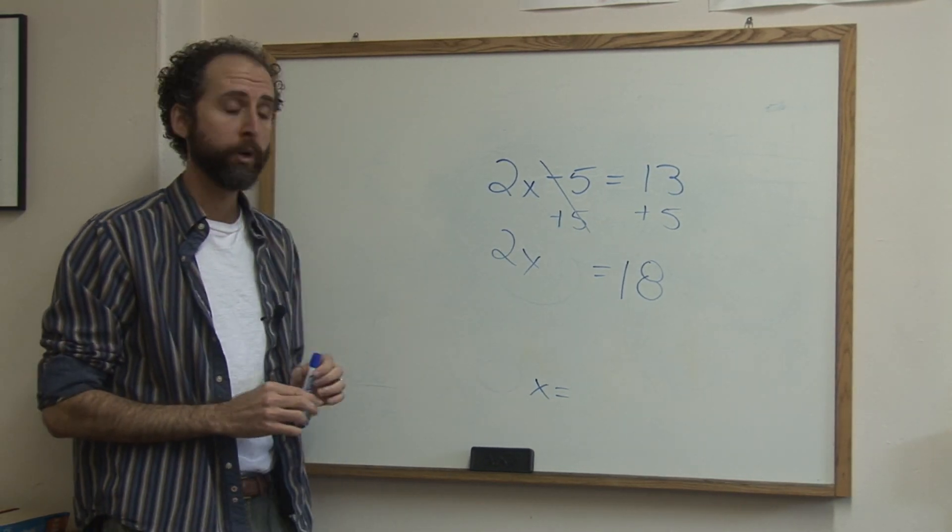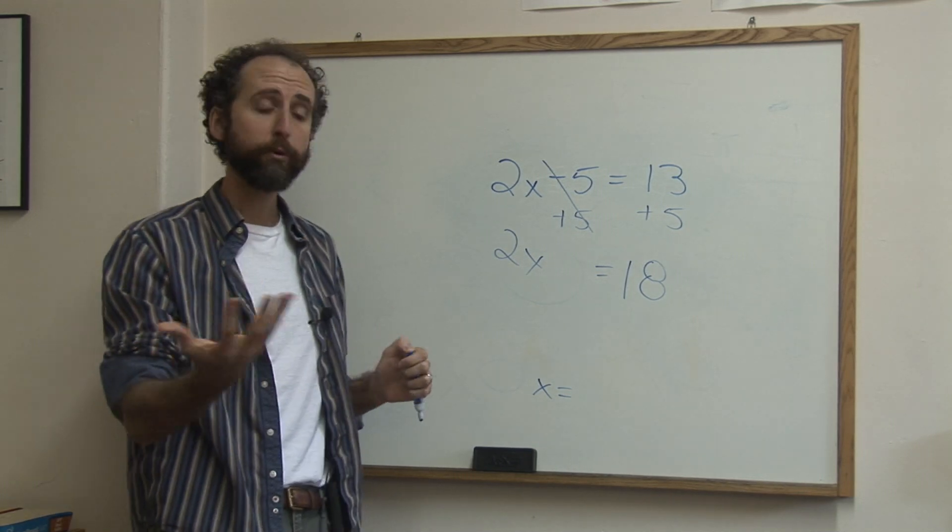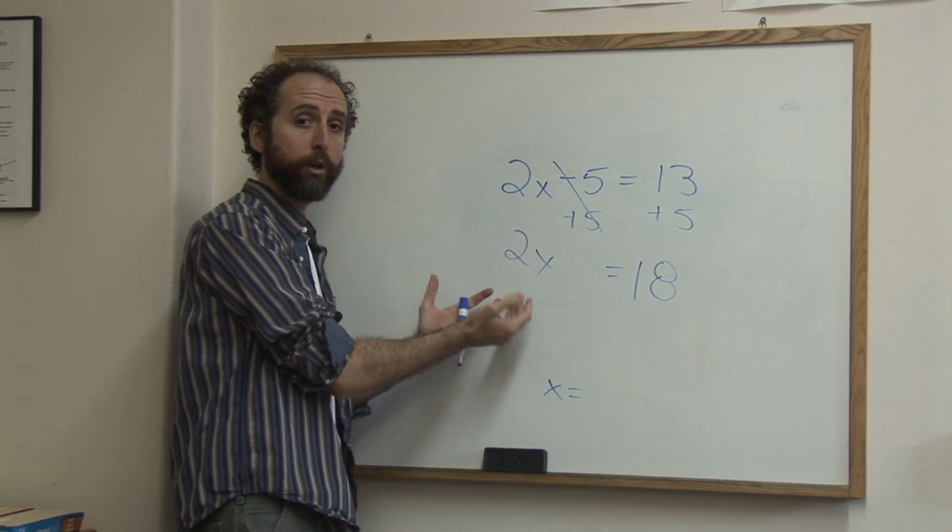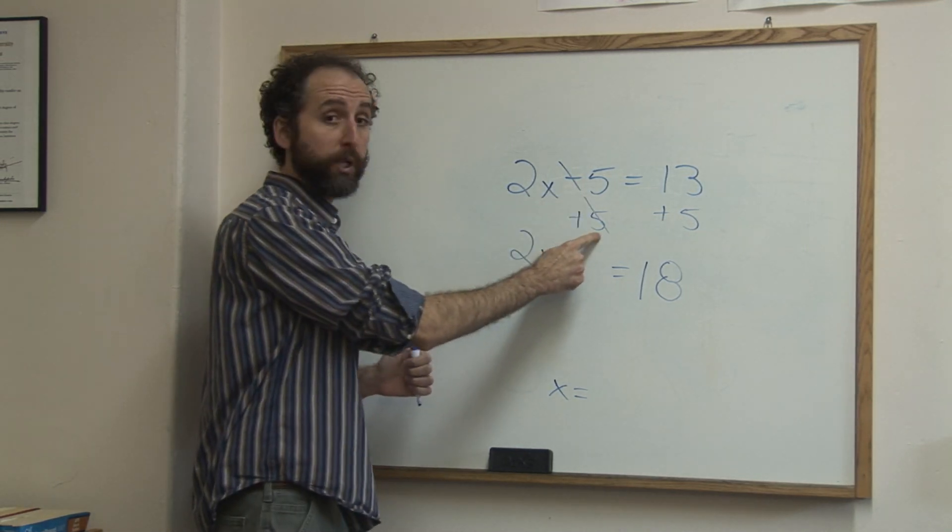Now this 2x really means 2 times x, and I told you whenever you want to eliminate a number to get the x alone, you're going to do the inverse, you're going to do the opposite. So the opposite of minus 5 was plus 5, equally so the opposite of times is divided.